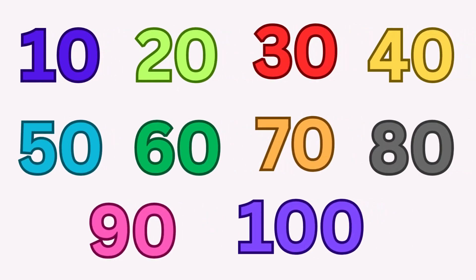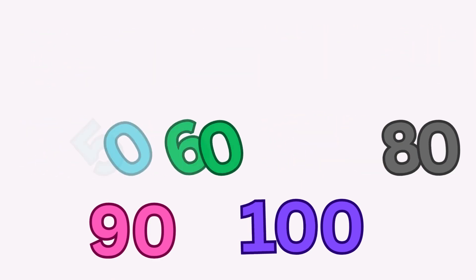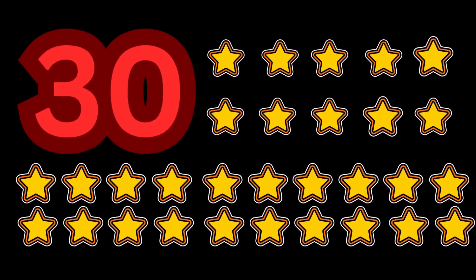Kids, let's count shining stars in the night sky. We start with 10 twinkling stars. Moving ahead, we count 10 more, and now we have 20 stars lighting up the sky. Continuing, we find another set of 10 stars, bringing our total to 30.